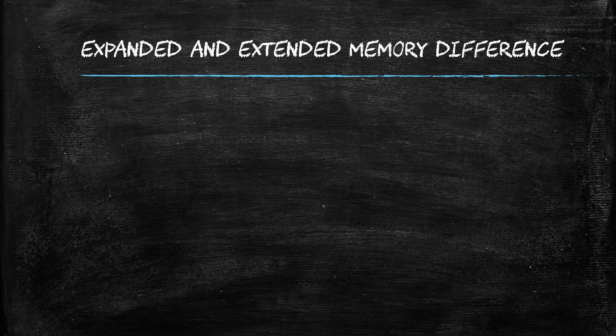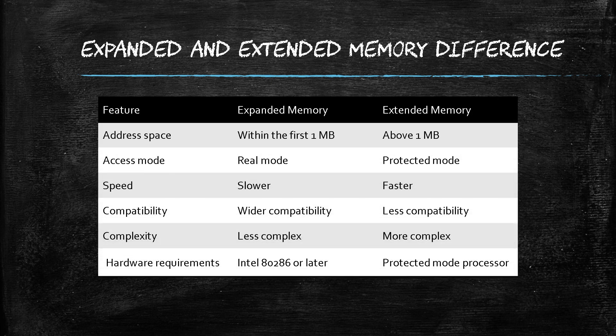What is the difference between expanded memory and extended memory in MS-DOS? The main difference is that expanded memory is emulated within the first 1 MB of address space, while extended memory is physically above the 1 MB address boundary. Expanded memory can be used by DOS programs running in real mode and is accessed through a special page frame, which can slow down performance. Extended memory can only be used by DOS programs running in protected mode, and it is typically much faster because it is accessed directly by the processor.